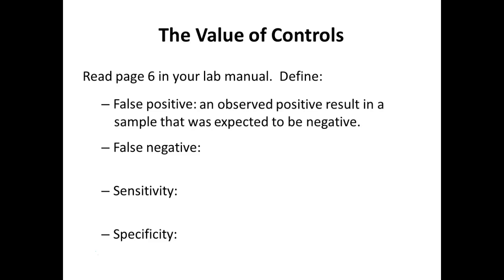If you observe a positive result but you're expecting negative — say you run a pregnancy test and it comes out positive — even worse, you're a guy who did it out of sympathy for your wife and it came out positive. Is there any way you could actually be positive for pregnancy? You're a guy, so no — it's not like the movie Twins, it doesn't really happen.